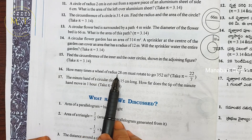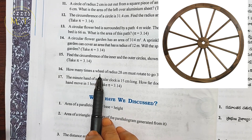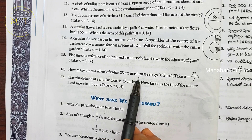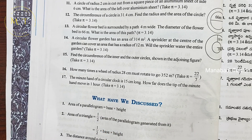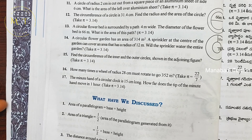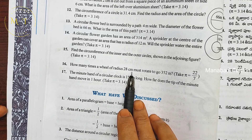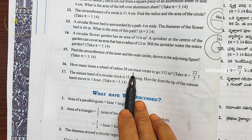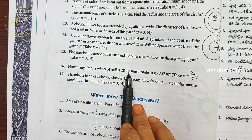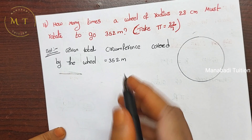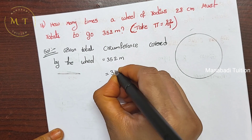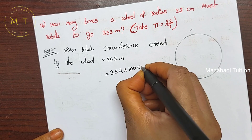Question number 16: how many times must a wheel of radius 28 centimeters rotate to cover a distance of 352 meters? We need to find how many rotations — 10, 20, 30 times? First, the wheel has radius 28 centimeters. The total distance is 352 meters, which we will convert to centimeters.